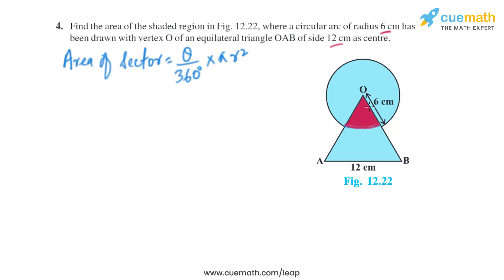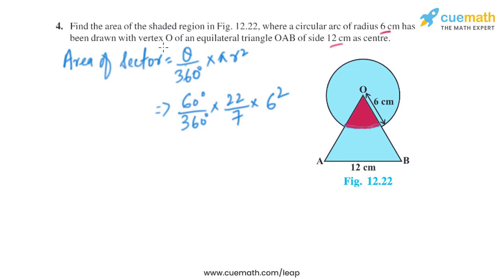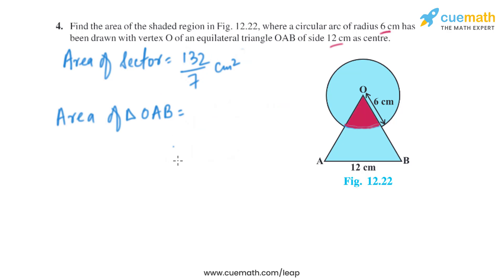Let's find the area of this sector, shown in red. Since OAB is an equilateral triangle, the angle is 60 degrees. So the area of sector is 60 divided by 360, multiplied by 22 divided by 7, and the radius is 6 centimeters — so it's 6 squared. On solving, the area of the sector is 132 divided by 7 square centimeters.